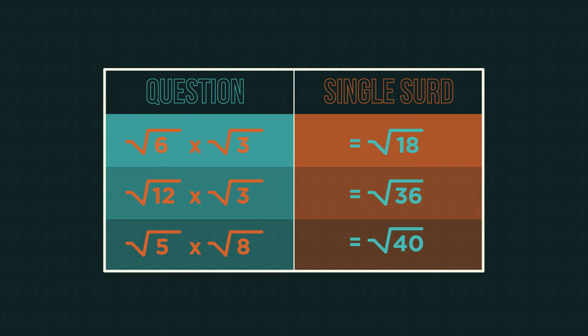So let's jump straight in with an example. Can you see what's happening? You just multiply the numbers together to make a single surd.